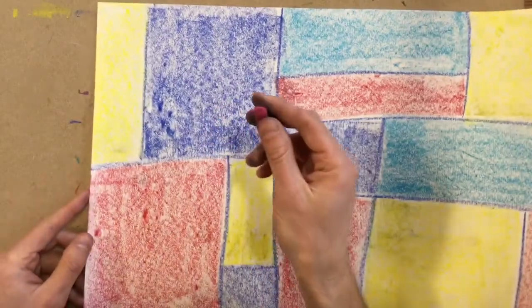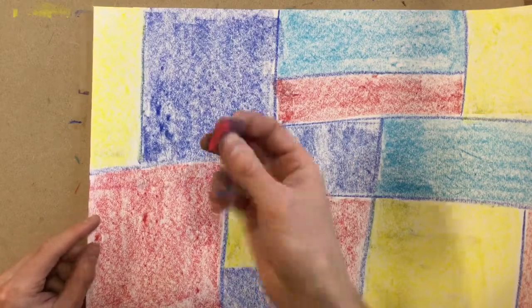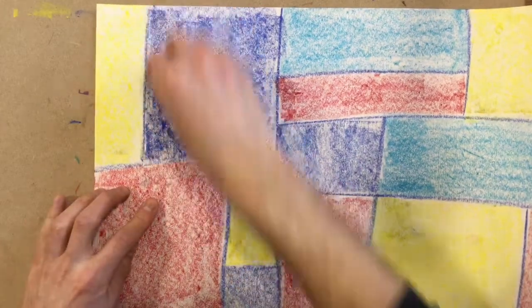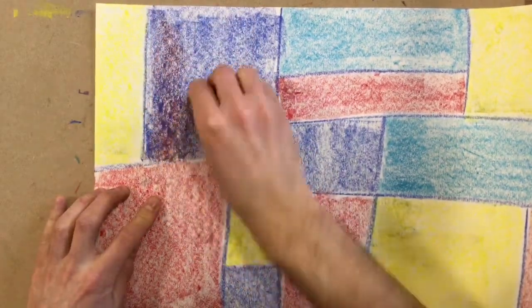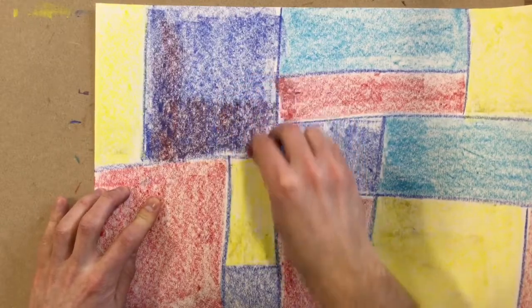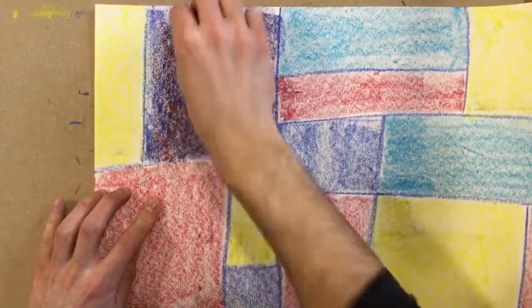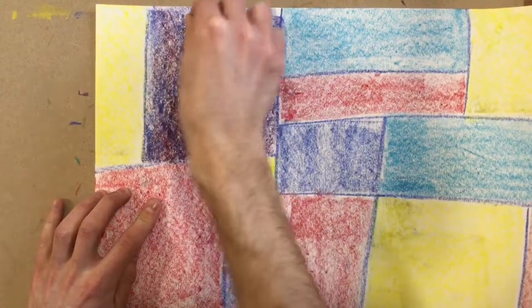Now we're going to overlap these colors and make some secondary. So I might take my red, I might color it on top of my blues. And you're going to notice I start to get a purplish color. So we know that red and blue make purple.